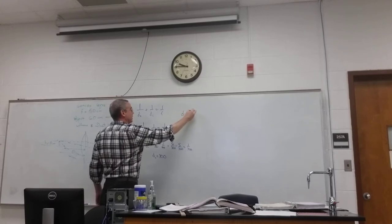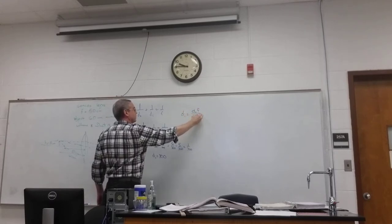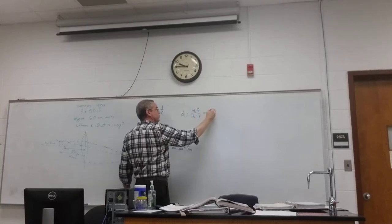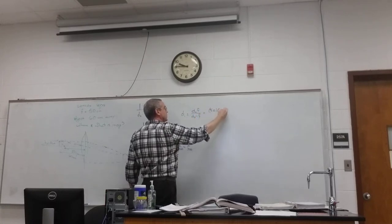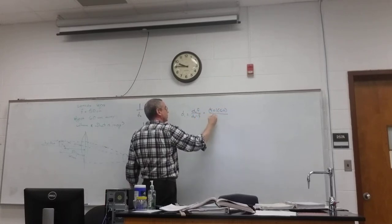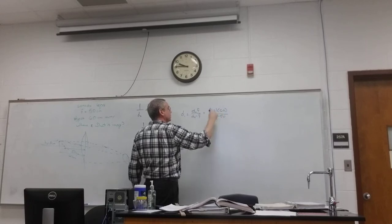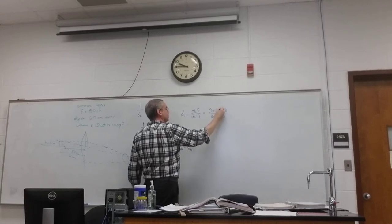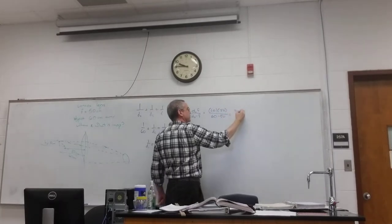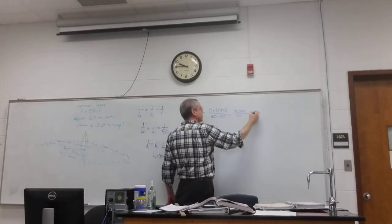If we did it the Christian way, it would be DOF over DO minus F, which is 50 times 60 over 60 minus 50, which is 3,000 divided by 10, which is 300.